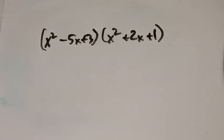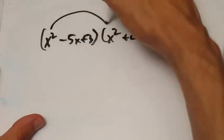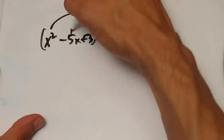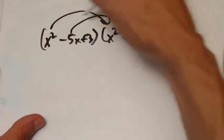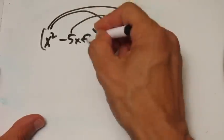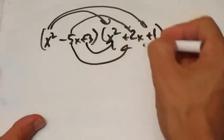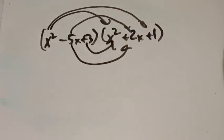As your polynomial gets bigger and bigger, it gets a little harder to multiply. You've got to go this times this, and this times this, and this times this one — and it can get a little crazy with these arrows going all over the place.